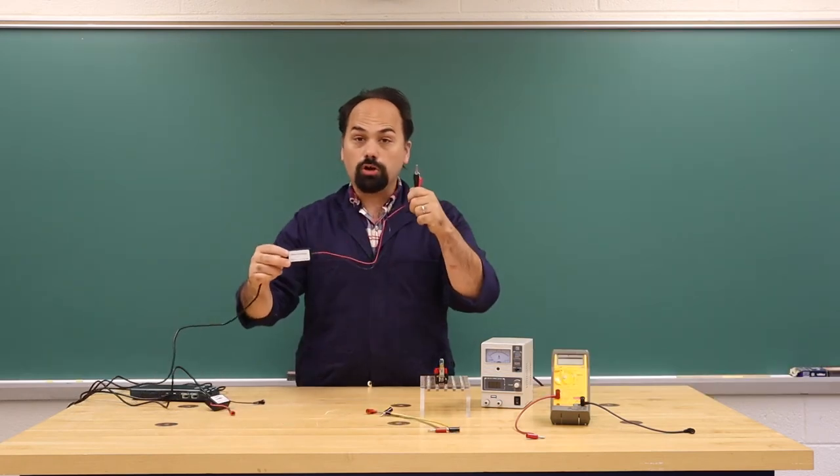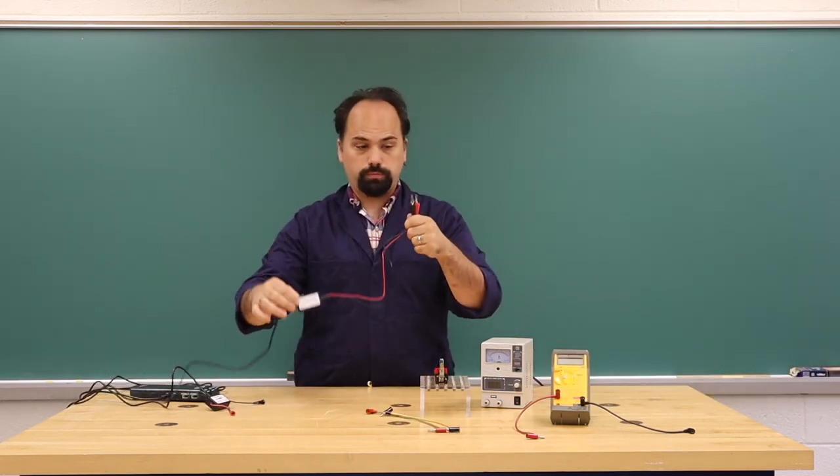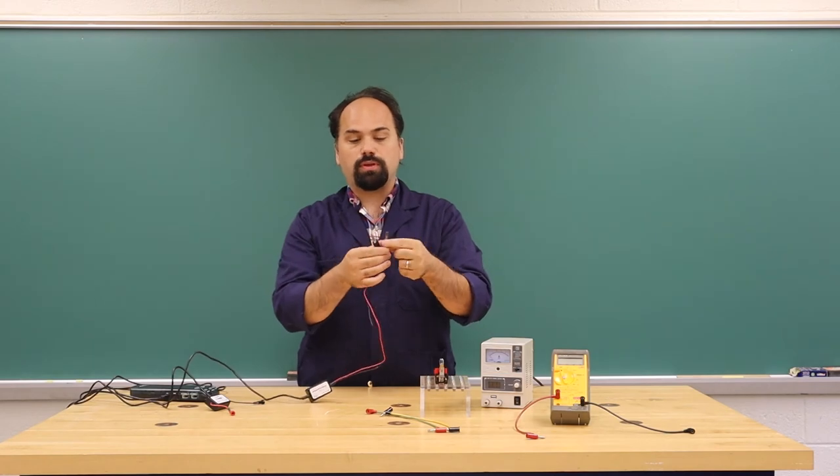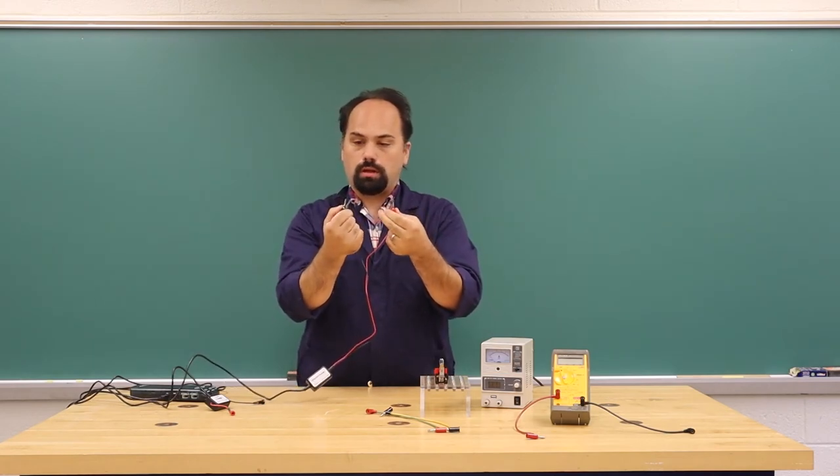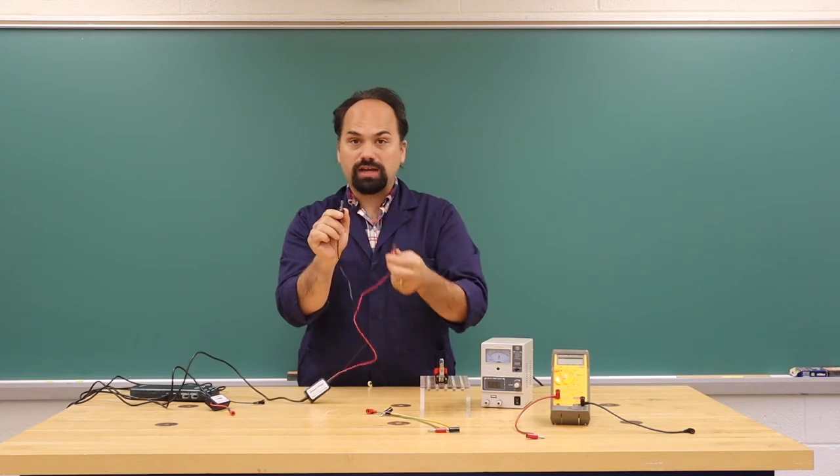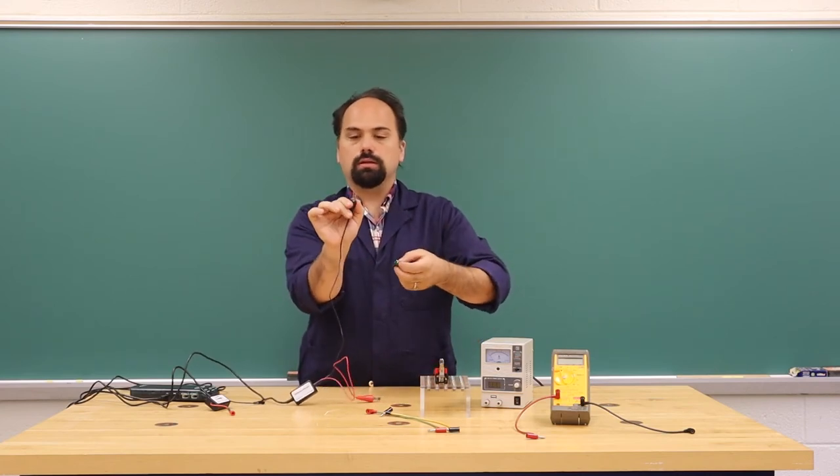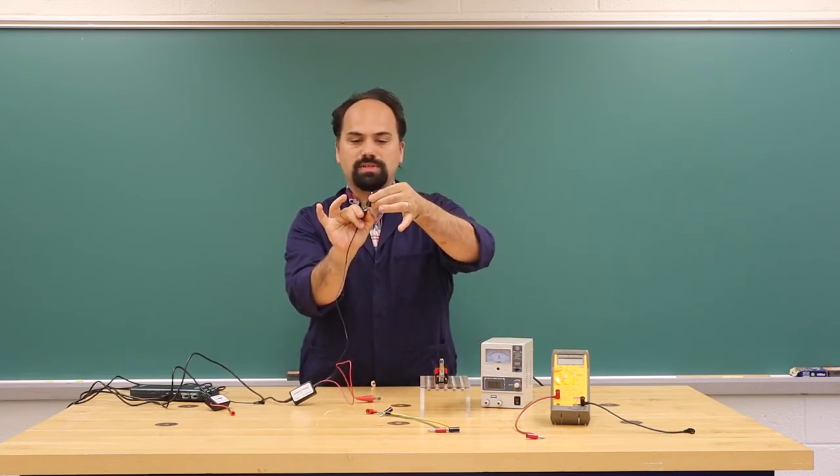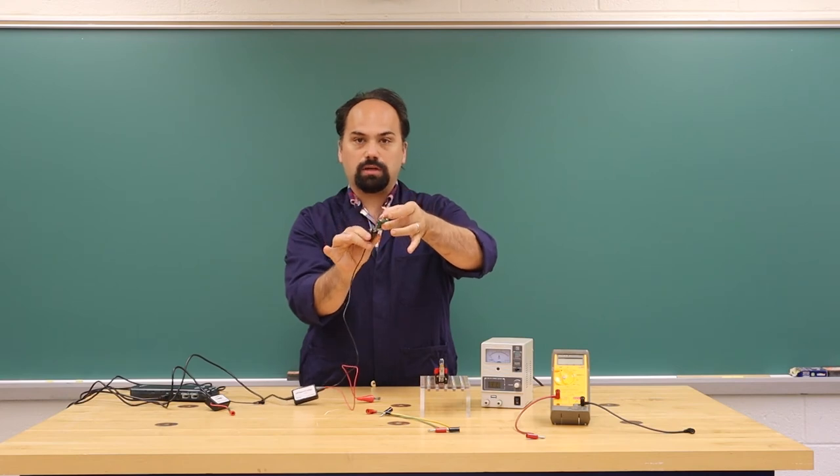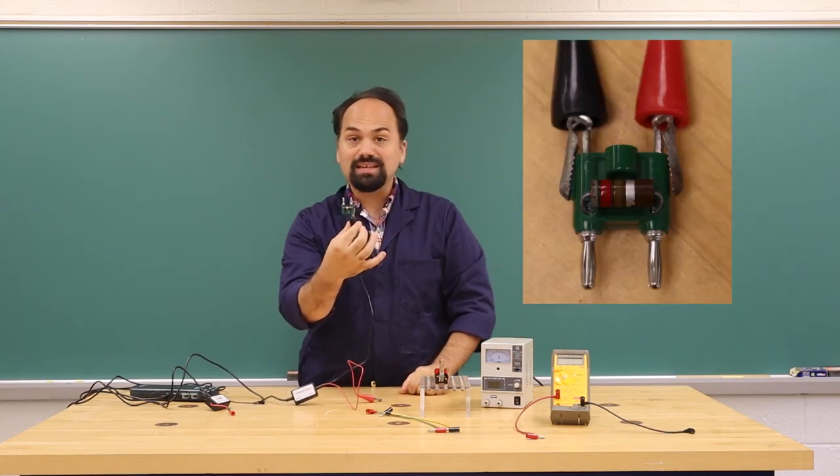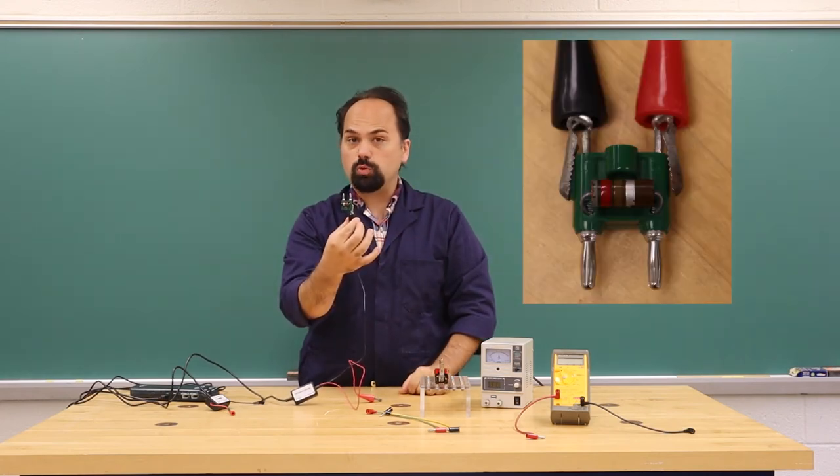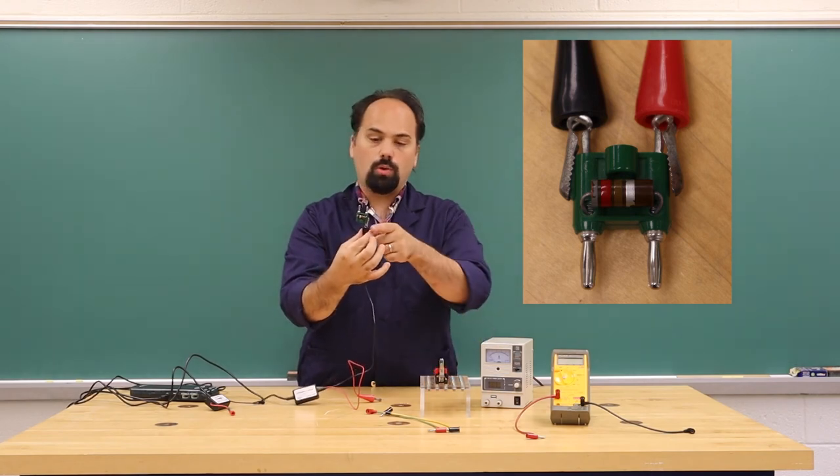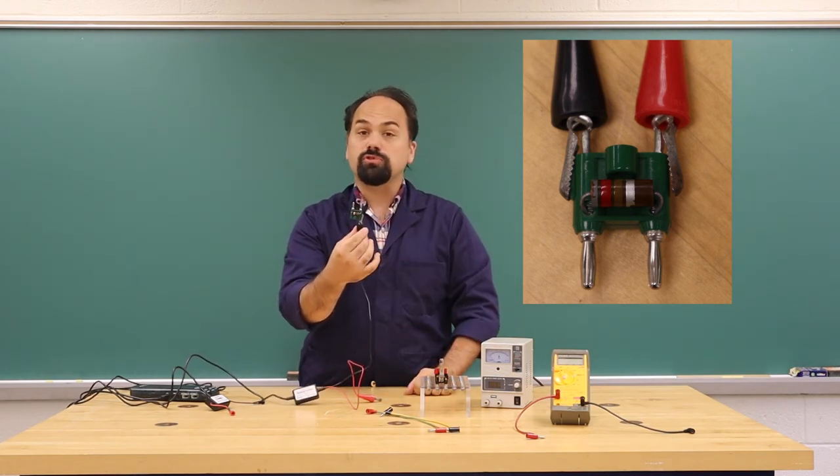On the Logger Pro voltage probes, these probes end with alligator jaws. The smaller side of the jaw is designed to be the same size as a banana plug, so it can go nicely into the plug and you don't need to worry about loose connections or if the two clips try to touch each other.